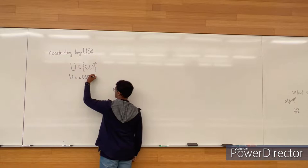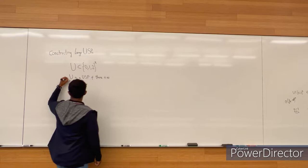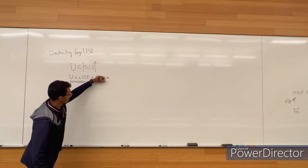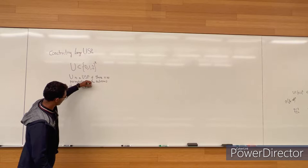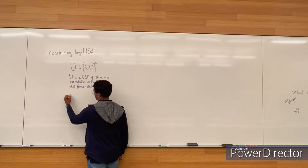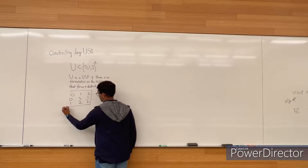...if there is no permutation on the sub-rows that forms a distinct puzzle. Just to provide a good example of what this means, let one of these USPs be the set: (0,1,2), (0,2,1), (1,2,2). Here is an example of a USP.